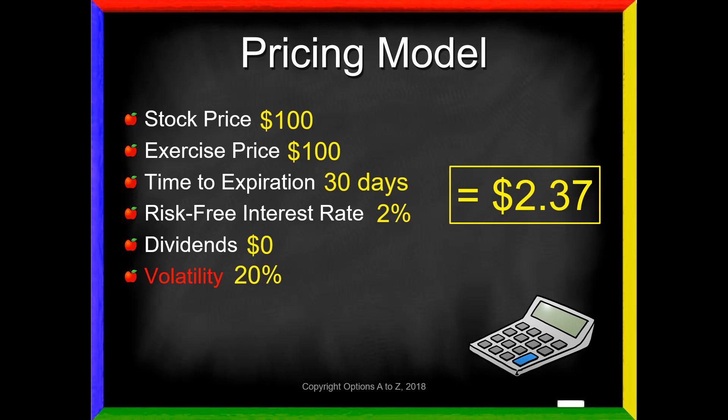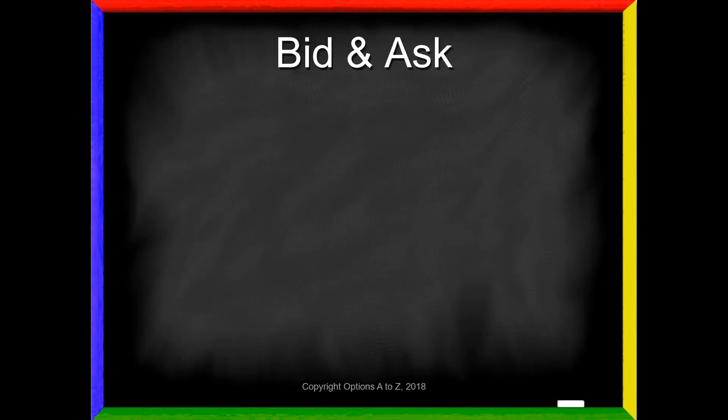But whenever we do examples like this, we're always assuming that there is a single price for an option. But in the real world, we know that that's not true. In the real world of trading, we have a bid-and-ask price. And therefore, we're going to get two different implied volatilities.